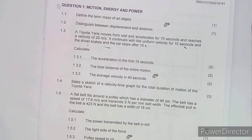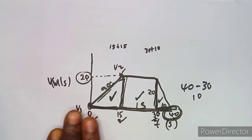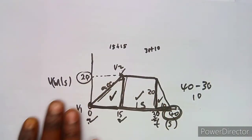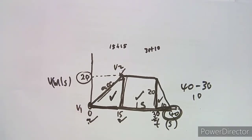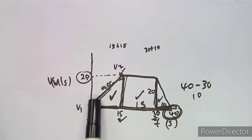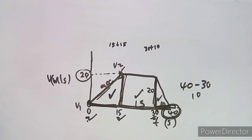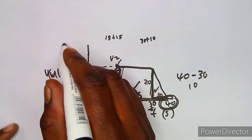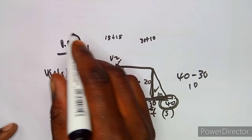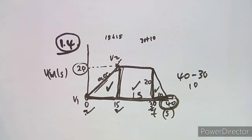Back to question 1.4 — draw a neat sketch of the velocity-time graph. Redraw the graph showing the key values: 0, 15, 30, and 40 on the time axis; 20 m/s on the velocity axis. Label velocity in m/s and time in seconds. Make sure it's a neat sketch.